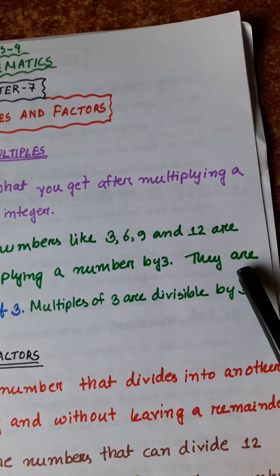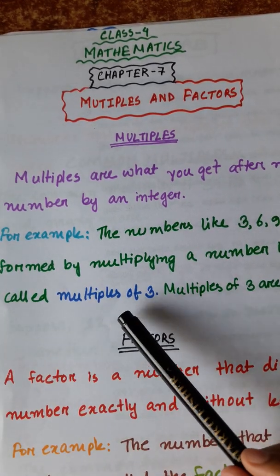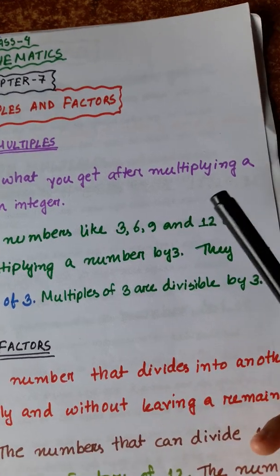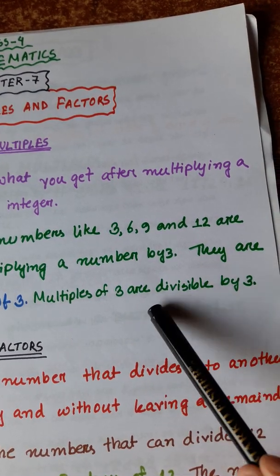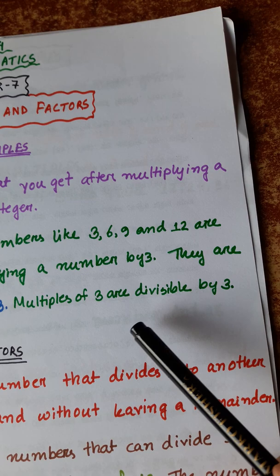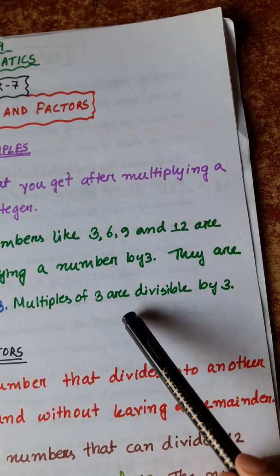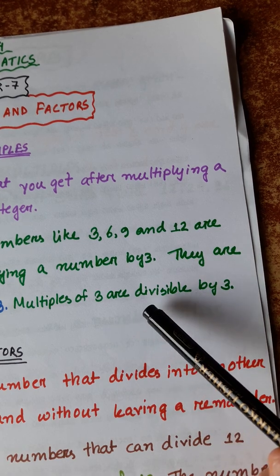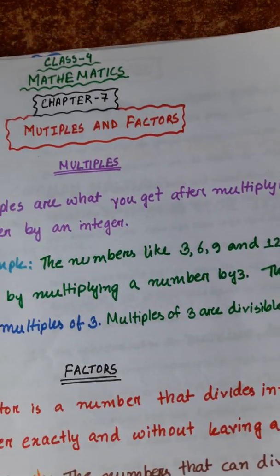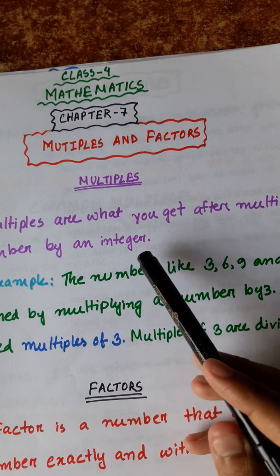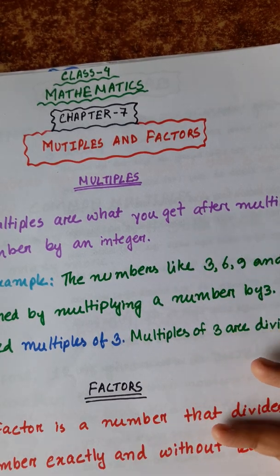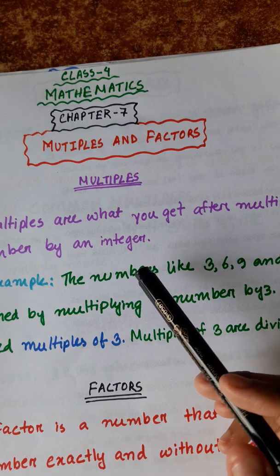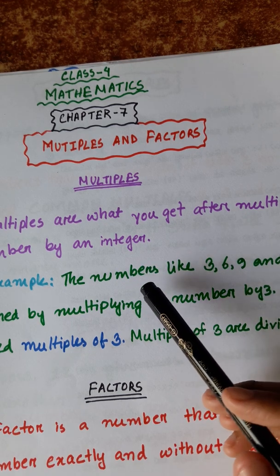They are called multiples of 3. Multiples of 3 are divisible by 3. So, multiples are what you get after multiplying a number by an integer.